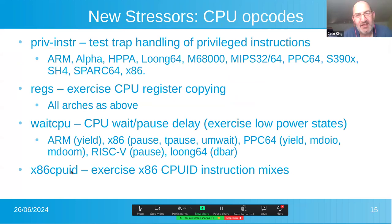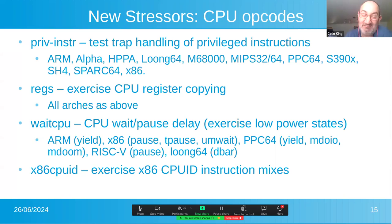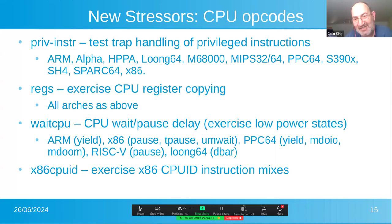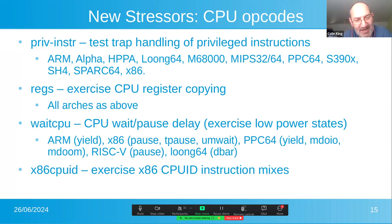For various architectures, I've added ways of triggering privileged instructions from non-privileged user space to see how those are being trapped and if the kernel handles them correctly. I've added a reg stressor for register copying of data to make sure no data is being lost or corrupted. For CPUs that allow waits and pauses from user space to drop into low power states — ARM, x86, PowerPC, RISC-V, and LoongArch64 — I've added a wait CPU stressor to exercise these opcodes. And for x86, I've added a CPUID stressor that puts in lots of random CPUID instruction mixes to see if that causes any hangs on large systems.